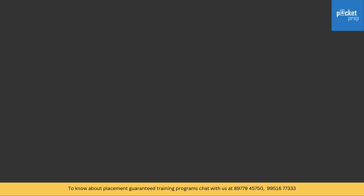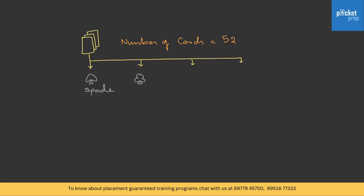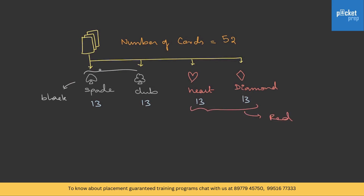Now let's move on to type 3 — problems based on playing cards. The number of cards in a deck is 52, classified into 4 categories: spade, club, heart and diamond — each having 13 cards. Spade and club are black; heart and diamond are red. The 13 cards in each suit are: ace, 2, 3, 4, 5, 6, 7, 8, 9, 10, king, queen and jack. This classification is enough to solve the problems.